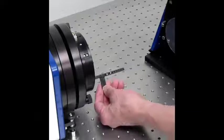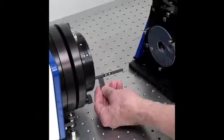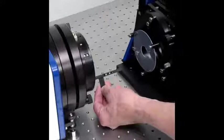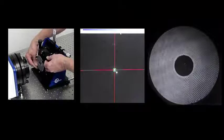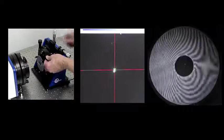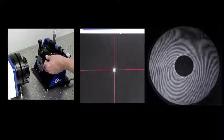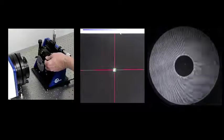Position the optic so that the test surface is the correct distance from the interferometer. Use the alignment window in Foresight Analysis software to roughly align the test optic. Adjust the tip and tilt to minimize the number of fringes.